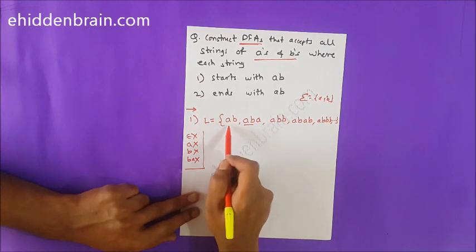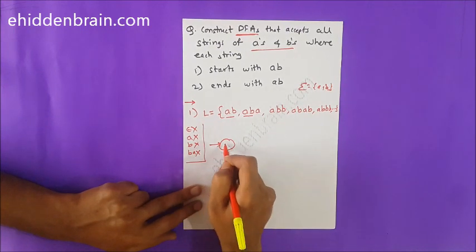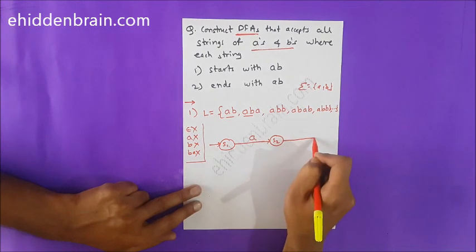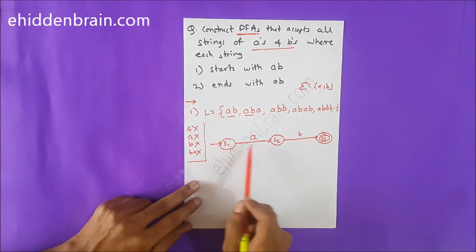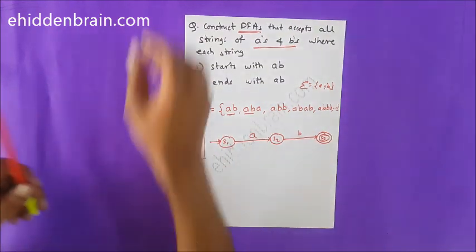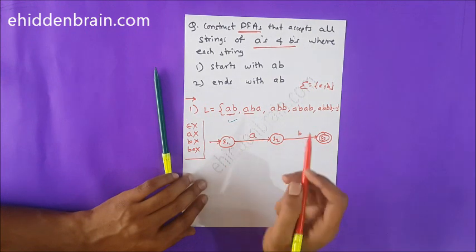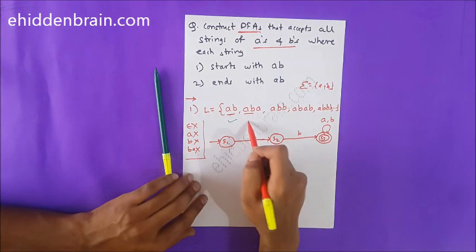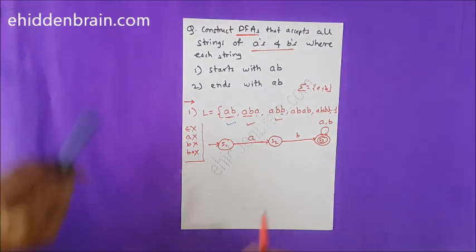Let's draw a DFA. I will have S1 as a state. On input A, it goes to S2. Then on input B, it goes to S3 — so AB is accepted. Next, from S3 on input A, I should also accept, and on input B I should also accept — giving ABA and ABB as accepted strings. You can see S3 has a self-loop, making it valid.